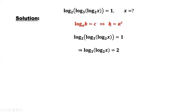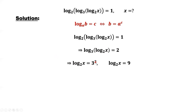Inside part b equals a to the power c. What is a in our case? a is 2. What is c? c is 1. So b equals 2 to the power 1. Now use this definition again. Here we have a different b: b is log base 2 of x. This implies b equals the base 3 to the power 2, that is log base 2 of x equals 9.